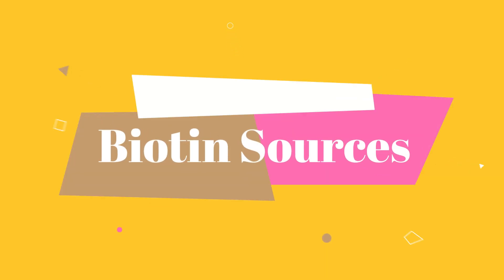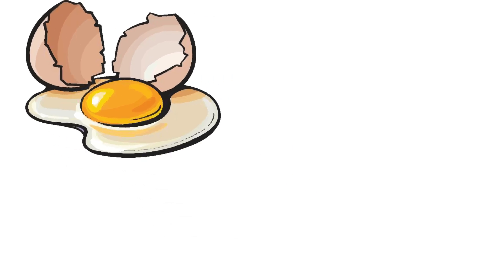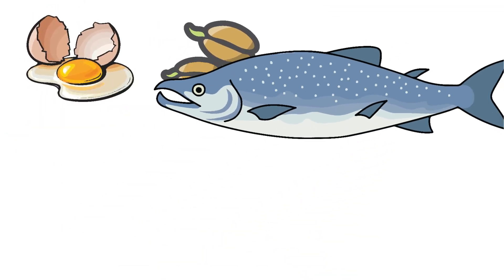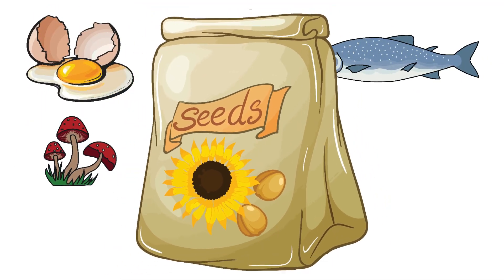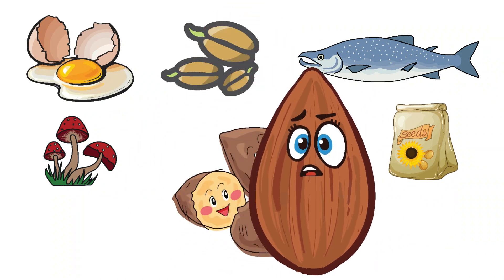Some of the best sources of biotin include eggs, wheat germ, salmon, mushroom, sunflower seeds, sweet potato, almonds, and beef liver.